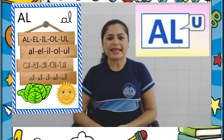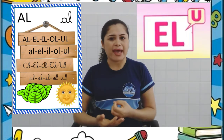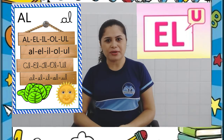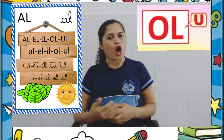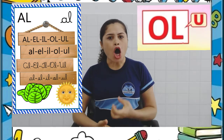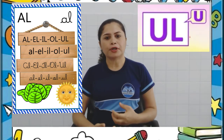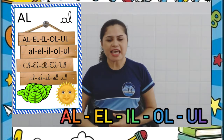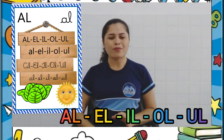A com L faz AU. Fala com a tia: AU. Muito bem! E com L: EU. Muito bem! E com L: EU. O com L: OU. U com L: U. Muito bem! AU, EU, EU, OU, U. Muito bem!